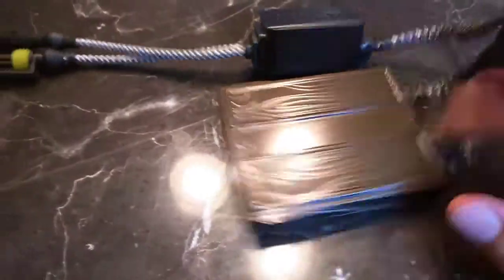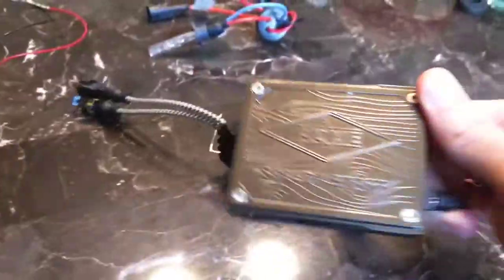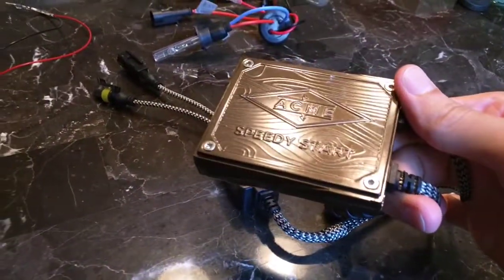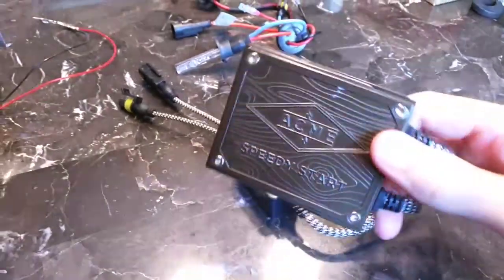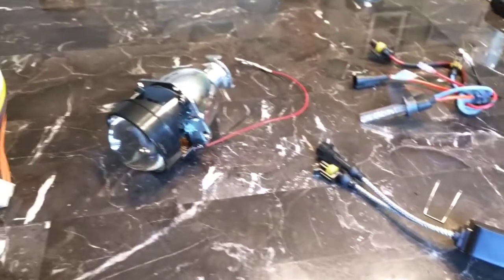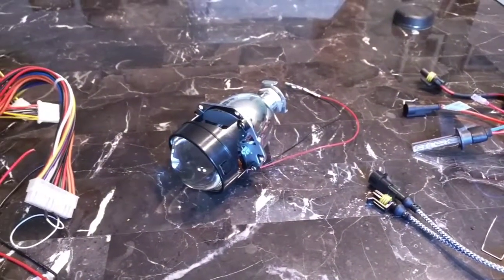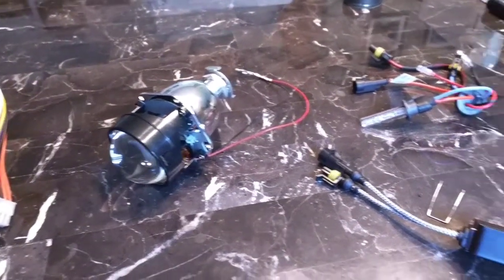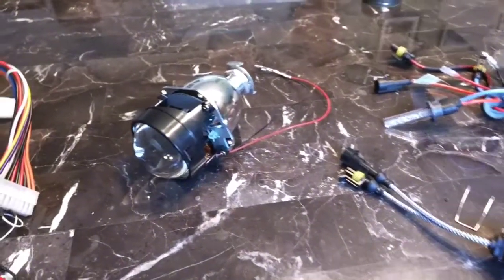And then the ballast itself. This is a 35 watt ballast. They call it a speedy start. I don't know if it actually starts up the bulbs any faster. If you're not familiar, HIDs take a few seconds to warm up when you start them. I'm going to go ahead and connect it all up and we'll see what it looks like.